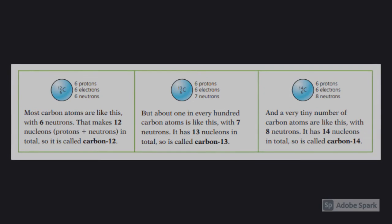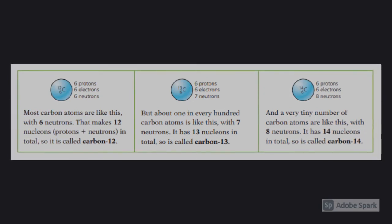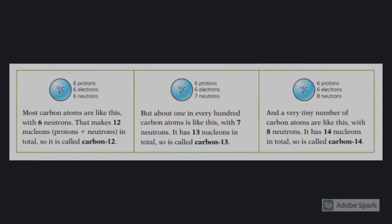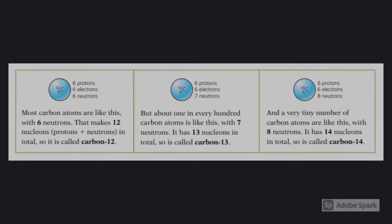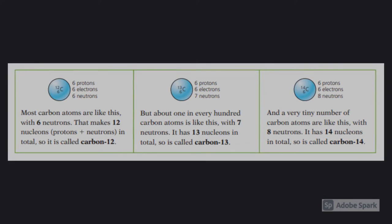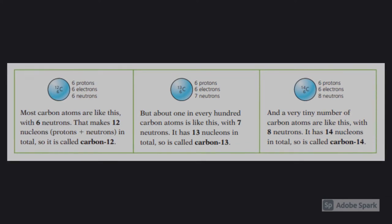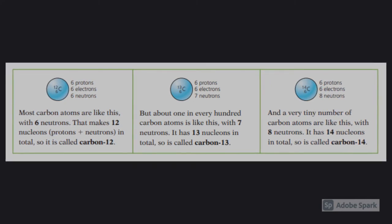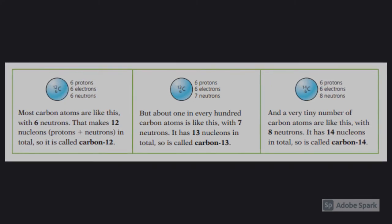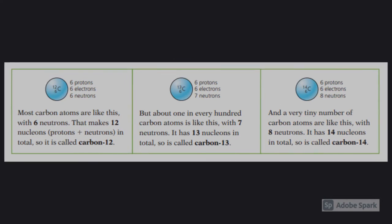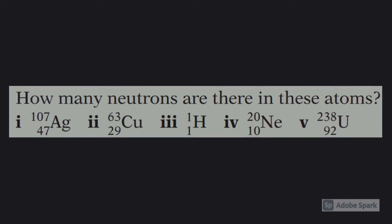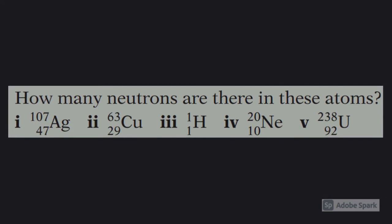Typical questions will give you a name of an isotope, for example, carbon-13 in the middle, and they will ask you, identify the number of protons in there. Identify the number of electrons and the number of neutrons. Remember, the proton number is basically the number of protons, which is equal in an atom to the number of electrons. Take that proton number away from the nucleon number, and you get the number of neutrons. So pause the video if you want to have a go at answering this question. How many neutrons are there in these atoms?